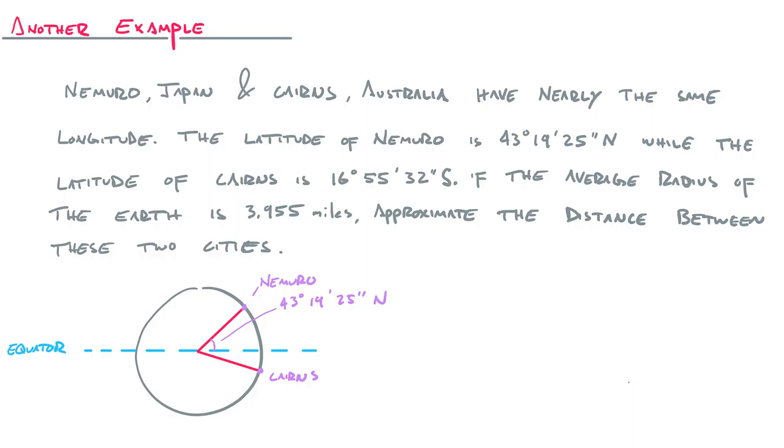The latitude of Cairns. Now, this is south of the equator. So it's technically a negative angle if you're going to write these things in standard position. But it's 16 degrees, 55 minutes, 32 degrees in a clockwise rotation away from the equator because it's south of the equator. So if we want to find the central angle right between these two cities along the great circle here, that I've kind of cut the earth along,